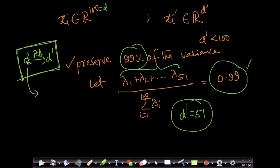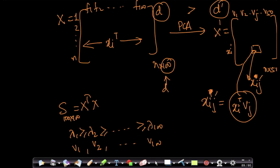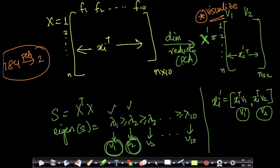In real-world datasets, d can be 100,000, which is too hard to work with directly. We find a manageable d_dash like 100 that preserves 99% of the data. For visualization, taking the top two eigenvectors is good enough. In the next video, we will see PCA applied to MNIST data, reducing 784 dimensions to 2 dimensions.